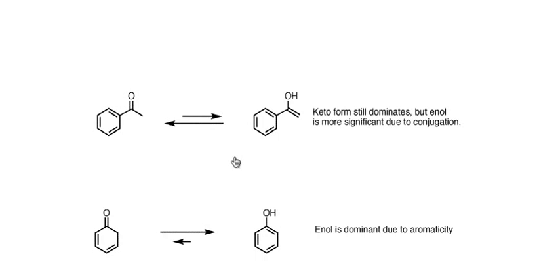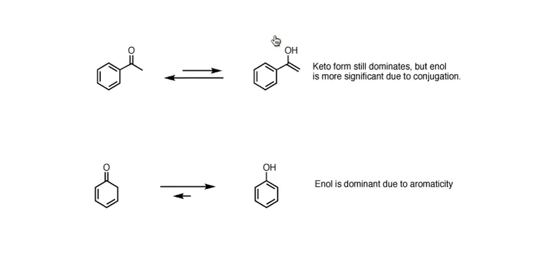The second thing I want to point out is that this enol form is actually going to be more stable than an average enol form. And why is that? Because it is in conjugation with the benzene ring. This is a stabilizing factor. So this relationship here might not be 5,000 to 1. It might be a little bit less. You would have a greater proportion of the enol in this case than you would in the above case. Conjugation is a stabilizing thing for alkenes.